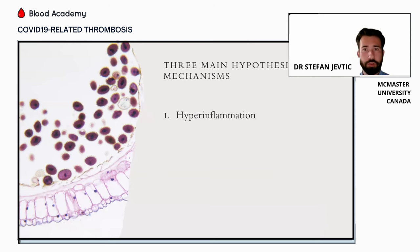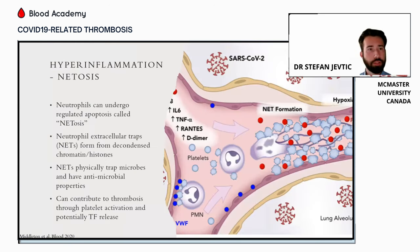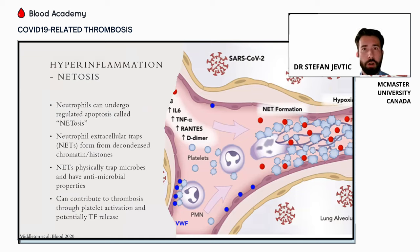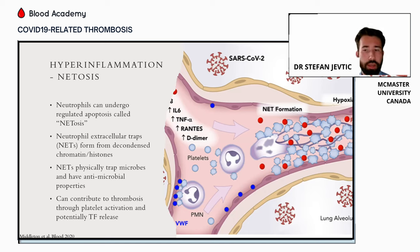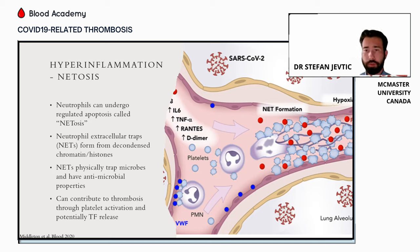The three main mechanisms related to COVID-19 coagulopathy are hyperinflammation, endothelial cell activation, and platelet cell activation. Starting with hyperinflammation — one component of the innate immune system is neutrophils, which are first-line responders to any pathogen infection. Neutrophils can undergo a process called netosis, or neutrophil extracellular trap formation, a regulated form of apoptosis involving decondensed chromatin and histones released from the neutrophil. These not only physically trap microbes and pathogens but contain bactericidal and antimicrobial proteins. Unfortunately, this can contribute to thrombosis by activating platelets and potentially releasing tissue factor.